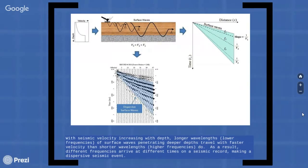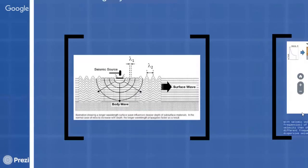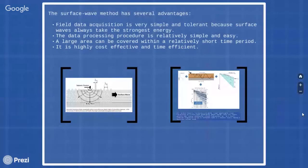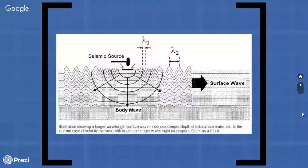The surface waves have several advantages. Field data acquisition is very simple and tolerant because surface waves always carry the strongest energy. The data processing procedure is relatively simple and easy even for non-experts. A large area can be covered within a relatively short time period. Because of all above reasons, it is highly cost effective and time efficient.